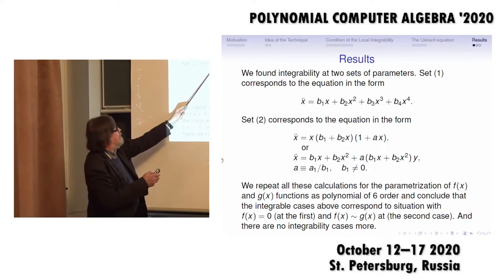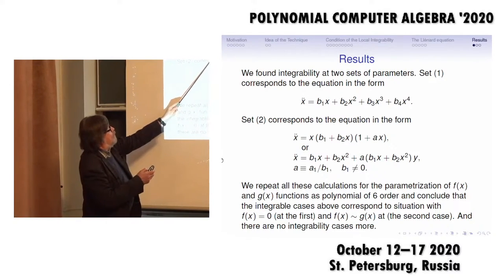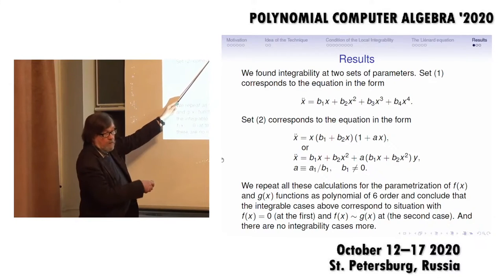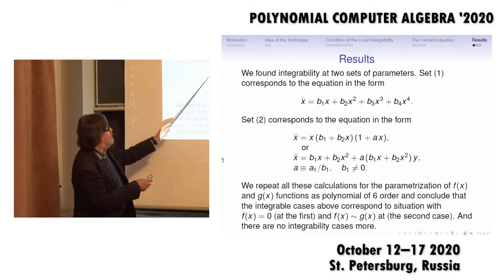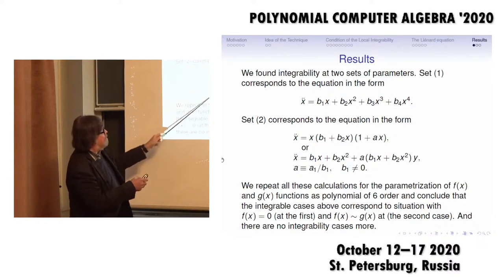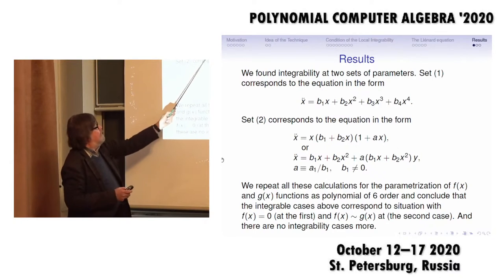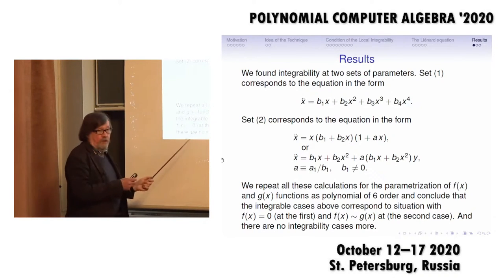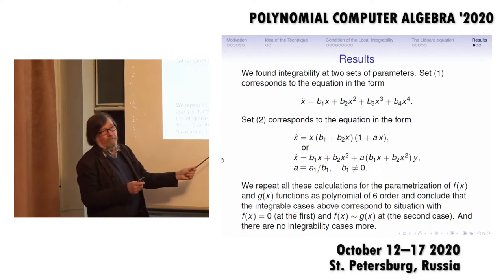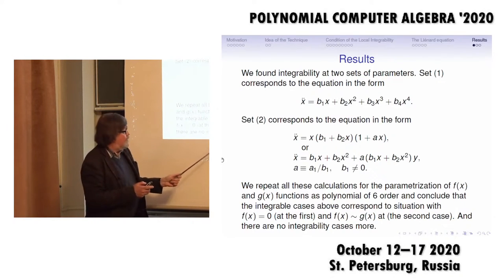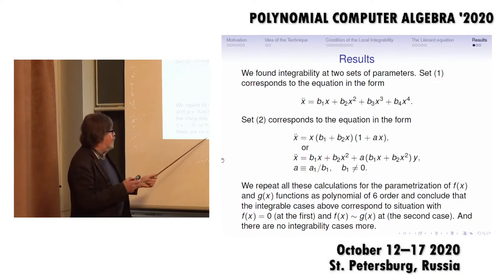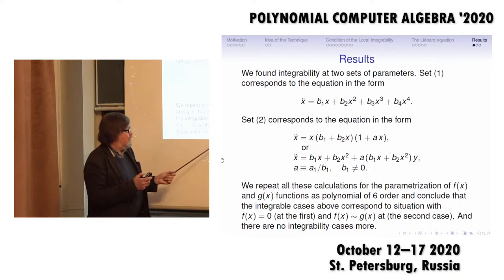There are two cases of the equation when we substitute parameters. For sixth-order F and G, we can see that really we have had only two moments: F at x equals 0, or f at x proportional to g. Very trivial result, but this is a fact that we have no more integrability cases.